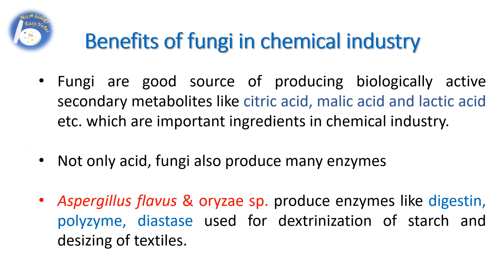Benefits of fungi in the chemical industry: fungi are a good source of producing biologically active secondary metabolites like citric acid, malic acid, and lactic acid, which are important ingredients in the chemical industry. Fungi also produce many enzymes. For example, Aspergillus flavus and related species produce enzymes like diastase and polygalacturonase, which are used for the transformation of starch and desizing of textiles.